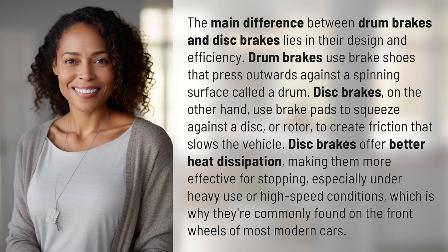The main difference between drum brakes and disc brakes lies in their design and efficiency. Drum brakes use brake shoes that press outwards against a spinning surface called a drum. Disc brakes, on the other hand, use brake pads to squeeze against a disc or rotor to create friction that slows the vehicle.